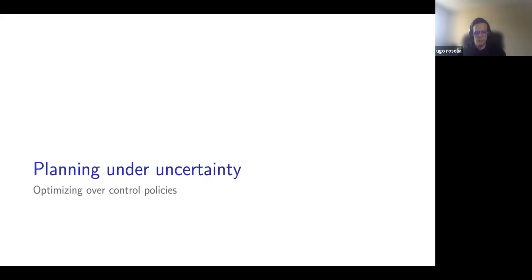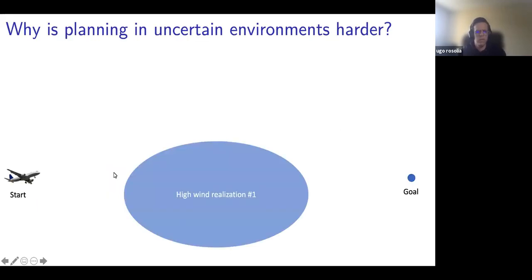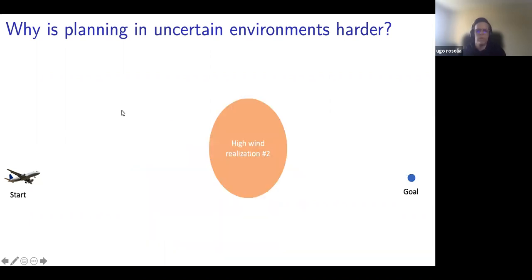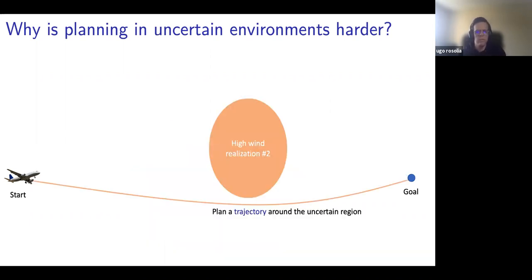First, I wanted to go through the example we saw last time. Let's say our goal is to design a controller for an airplane that has to reach a goal state and avoid obstacle regions where there will be high wind. When the obstacle is static, we can simply compute a trajectory — for instance using the batch approach from lecture two — that goes around the obstacle and minimizes some cost. The same applies when the obstacle is in a different position: the trajectory goes under the obstacle to minimize fuel by taking a short path.